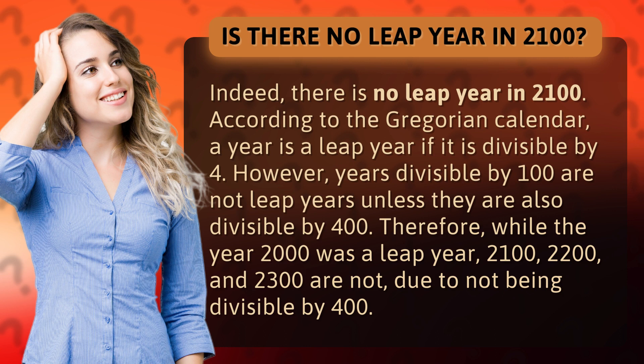Therefore, while the year 2000 was a leap year, 2100, 2200, and 2300 are not, due to not being divisible by 400.